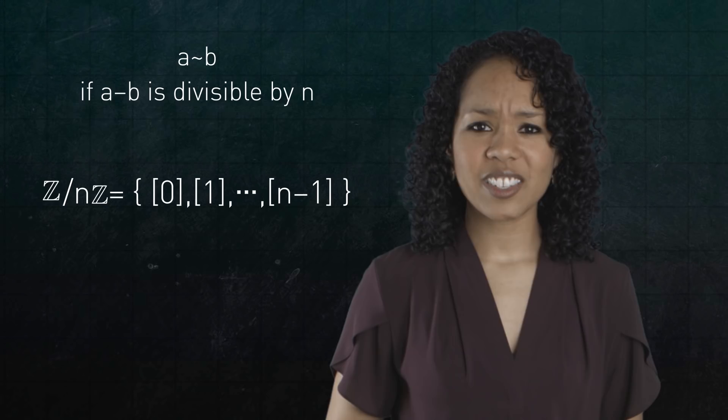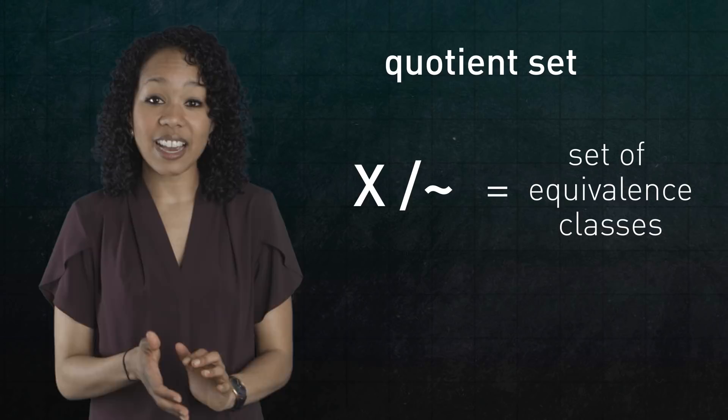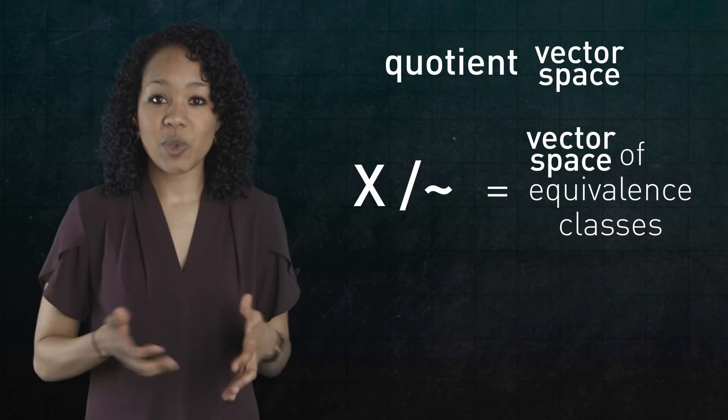Given any set x and any equivalence relation on that set, we can form a quotient set by identifying or clumping or gluing together all of the points that lie in the same equivalence class. In fact, x can be a group or ring or vector space or whatever, and we can form a quotient of that group or ring or vector space.